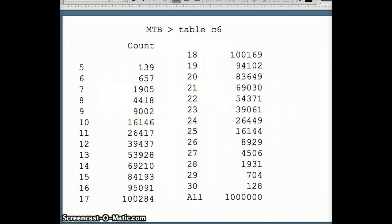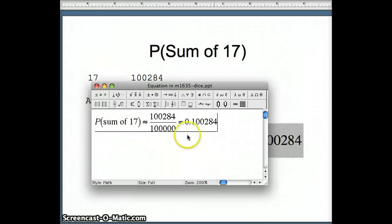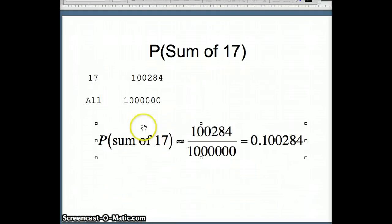And then we can see all of the results that we have. Now we are interested in the sum of 17. So how often did we get a sum of 17? We have 100,284 out of 1 million. That will give us our relative frequency of success. 100,284 out of 1 million, and we get 0.100284 as the approximate probability for the sum of 17. Getting the exact number there would certainly be very challenging.